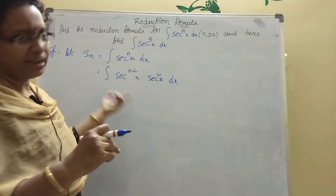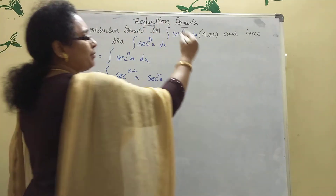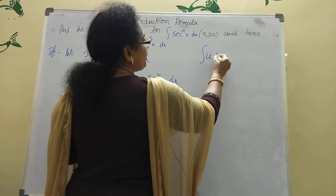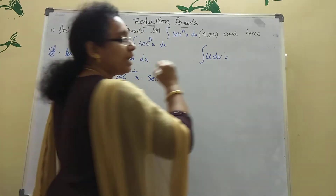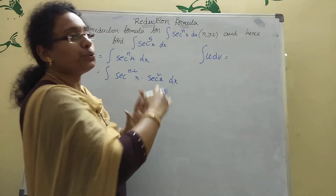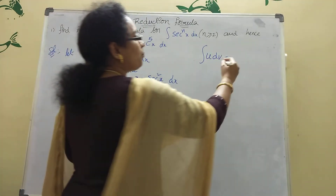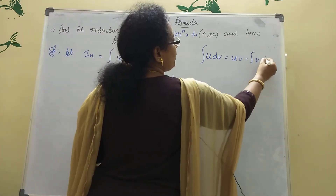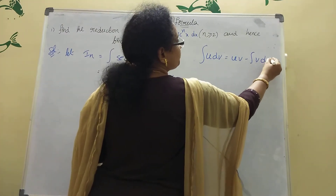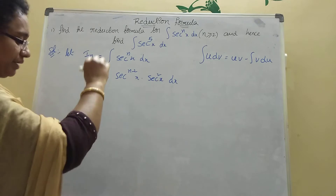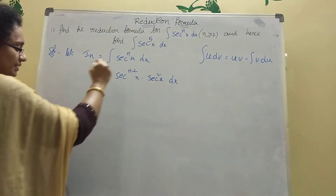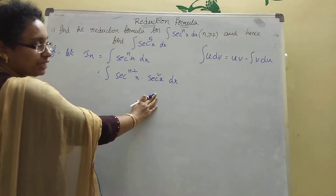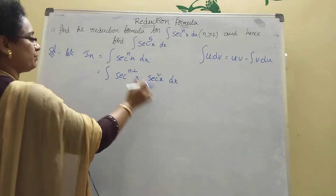Here we apply the u-v method. The integration by parts formula is: integration of u·v = u·v minus integration of v·du. Now I am taking u equal to secant power (n minus 2) x, and dv equal to secant squared x.